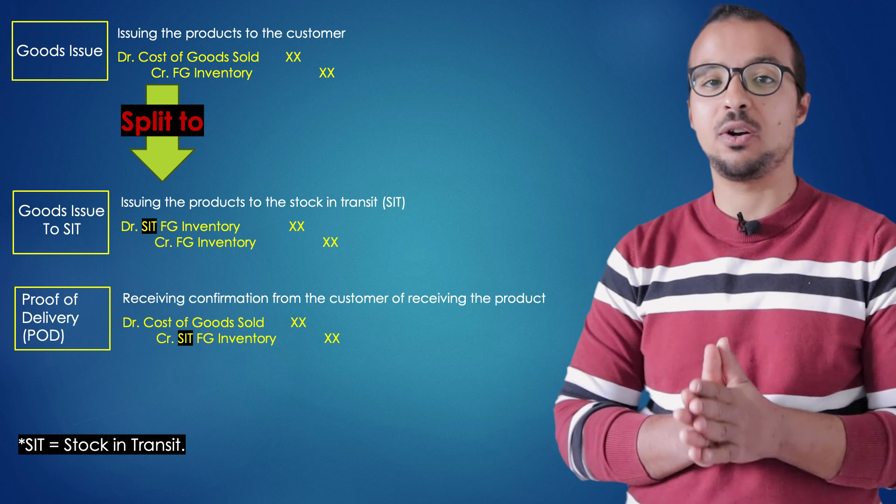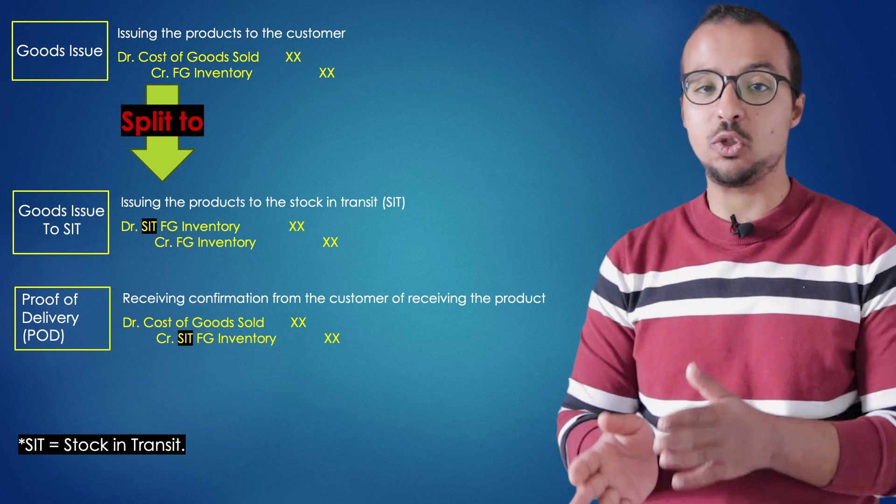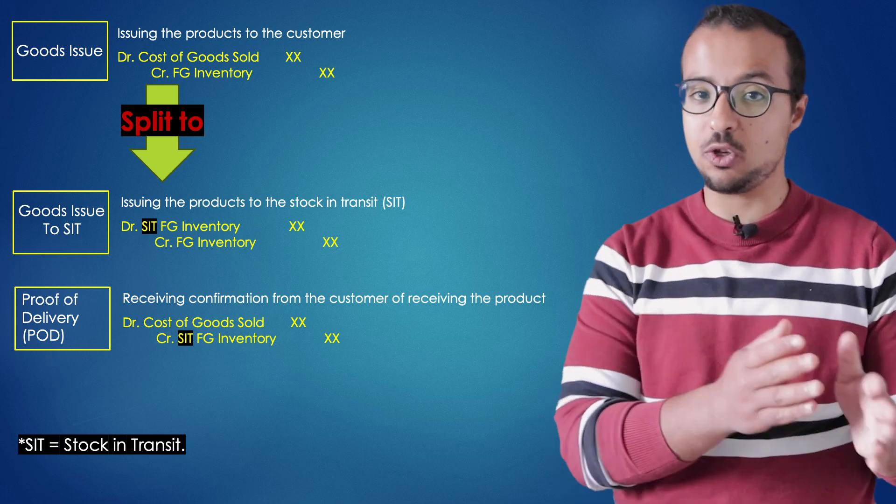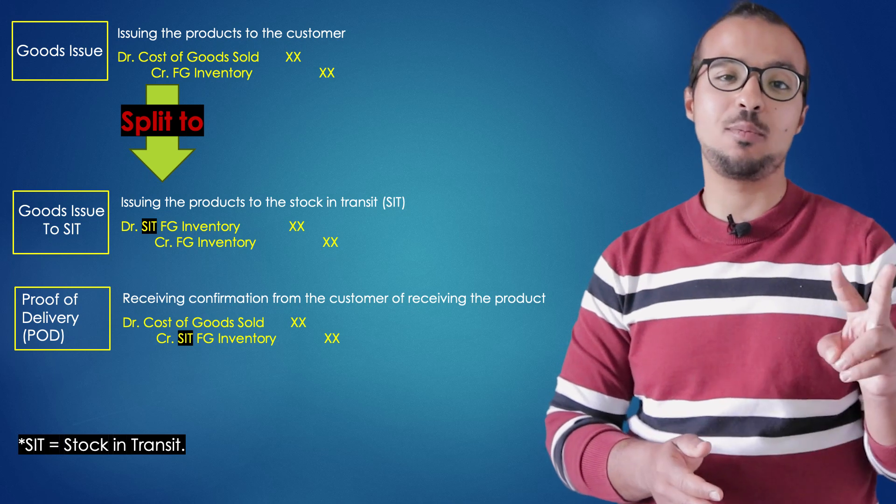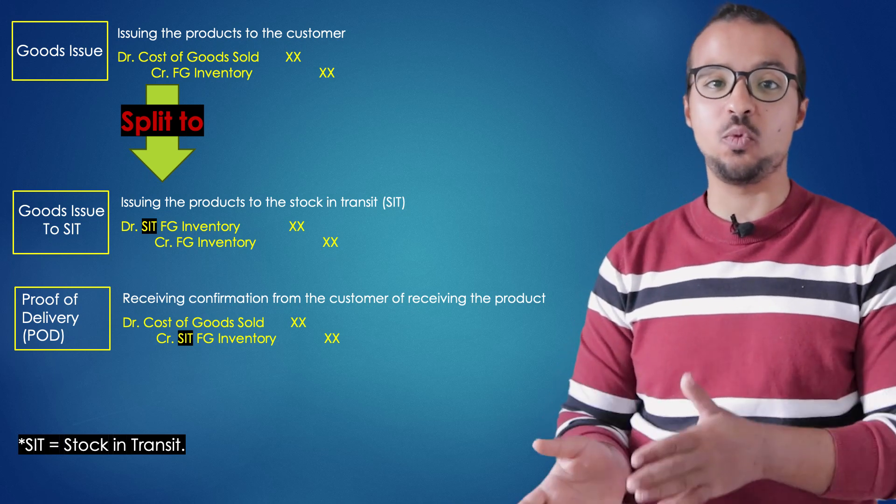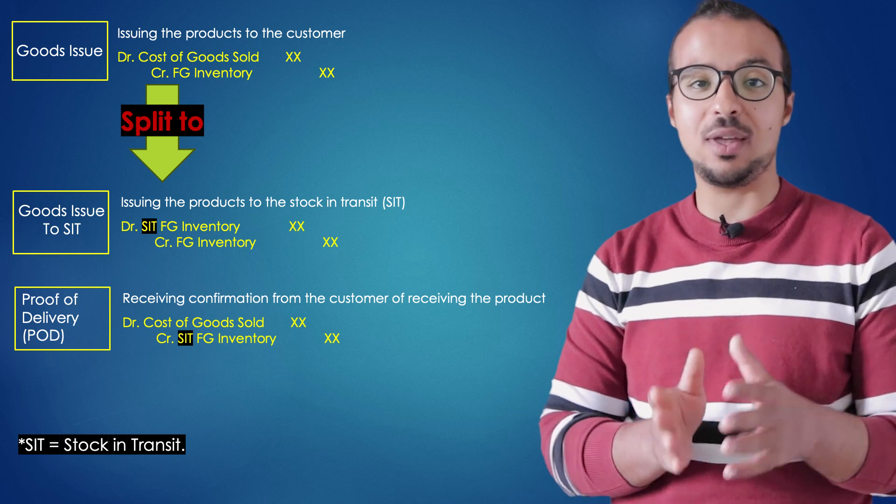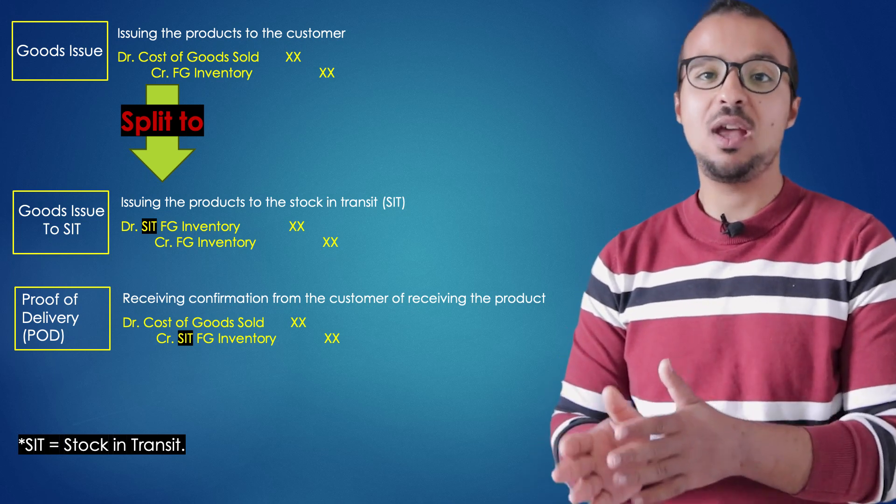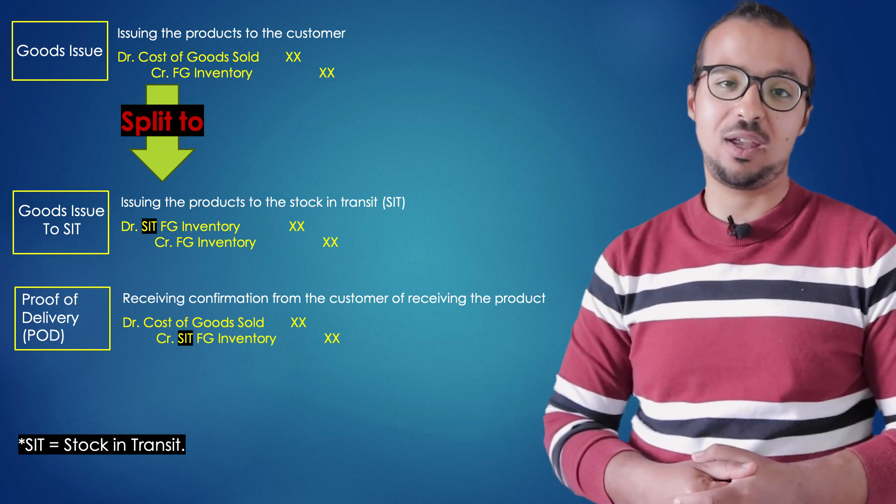Once the products arrive at the delivery location and we transfer the ownership of the products to the customer, we post the second step of the goods issue, which is called proof of delivery. In this step, we have an accounting entry that will credit our stock in transit and debit the cost of goods sold account.